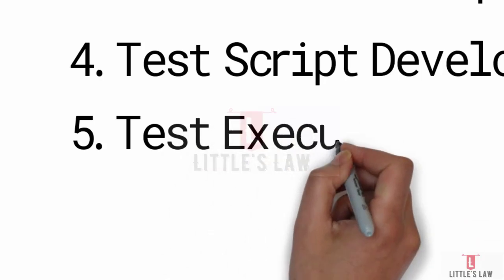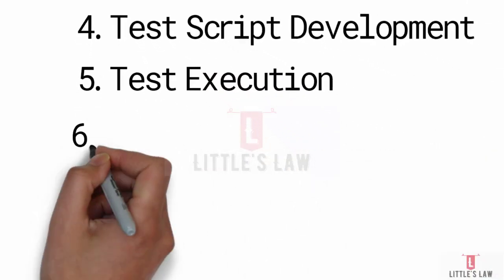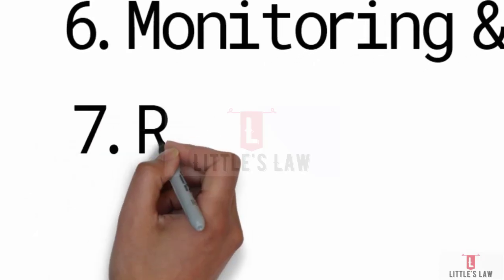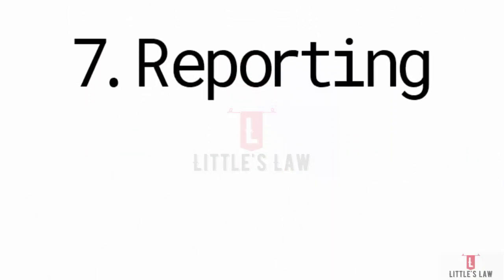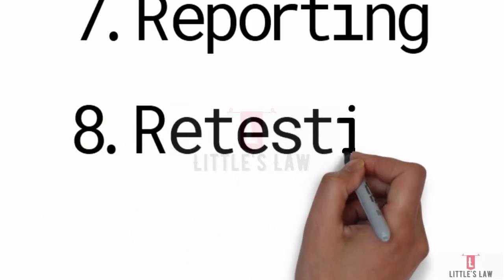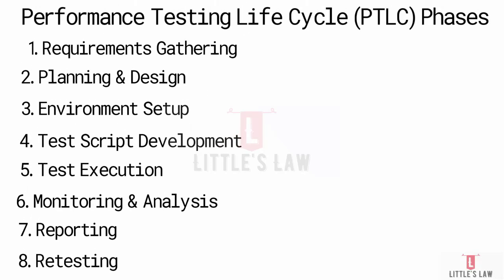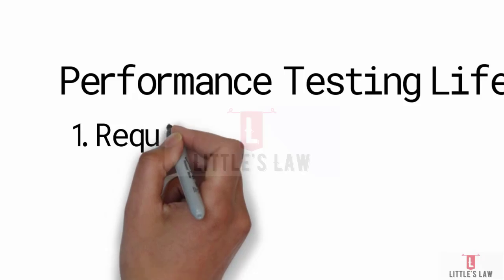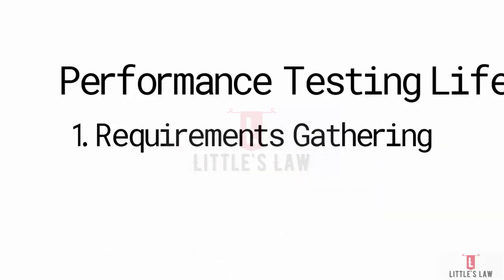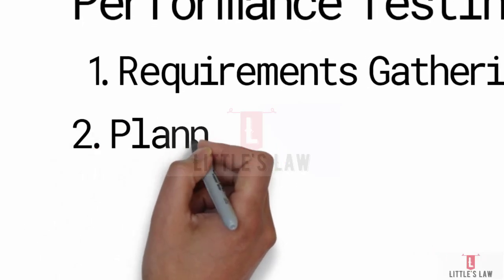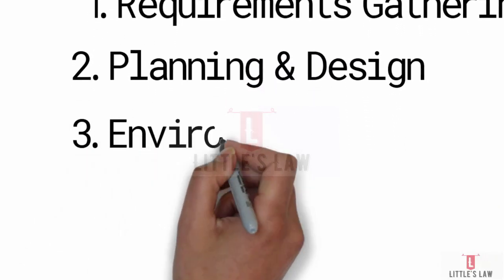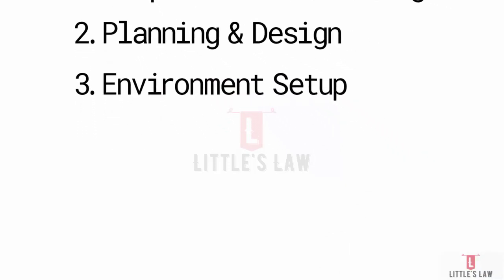The third phase is environment setup, where you prepare the test environment. You set up a test environment that closely mimics the production environment. If one already exists, you move to preparing the test data needed for executing the performance tests. Then comes tool configuration — installing and configuring the performance testing tools. The outcome of this phase is a ready-to-use test environment.